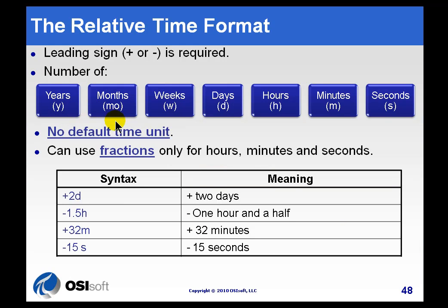The only tricky one is MO for month to distinguish it from M for minutes. So, for example, plus 2D for two days, 1.5H for hours, 32M for minutes, not months.